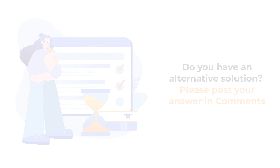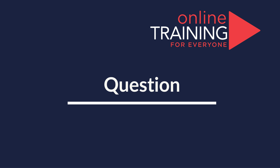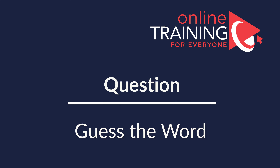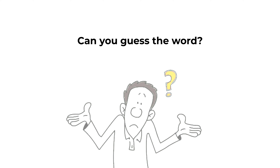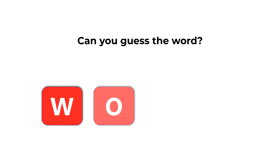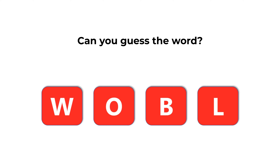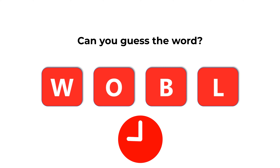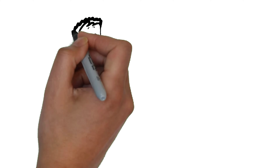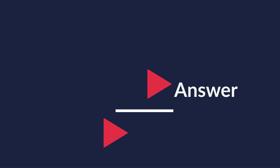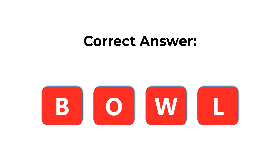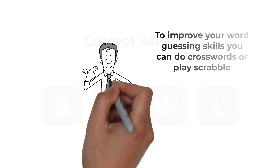Here's a cool question you frequently get on the test. You're presented with four different letters and you need to guess the word using all letters presented. The letters are W, O, B, and L. Can you guess the word? The correct answer is BOWL, which is spelled B, O, W, L. Hopefully you've nailed this question and now know how to answer similar problems on the test.